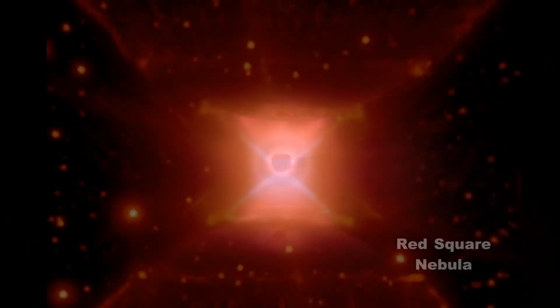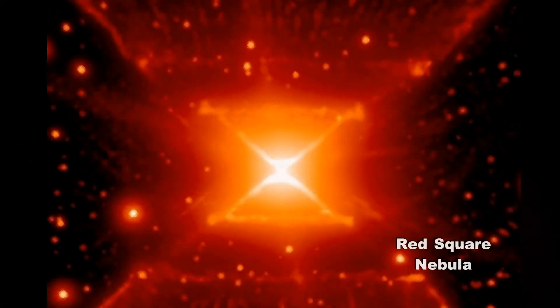By adjusting the exposure settings on the camera, an X-shaped pattern is revealed between the magnetic field emitters that is amazingly similar to the shape of the red square nebula.